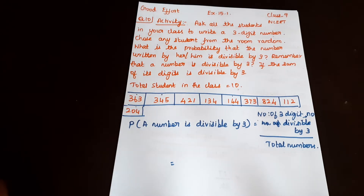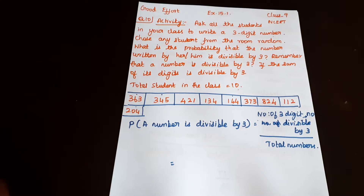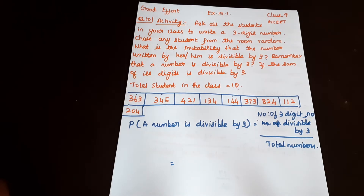We will collect this data from 10 students. Now I have 10 students. The 10 students have written their 3-digit numbers. Now I'll calculate the probability.